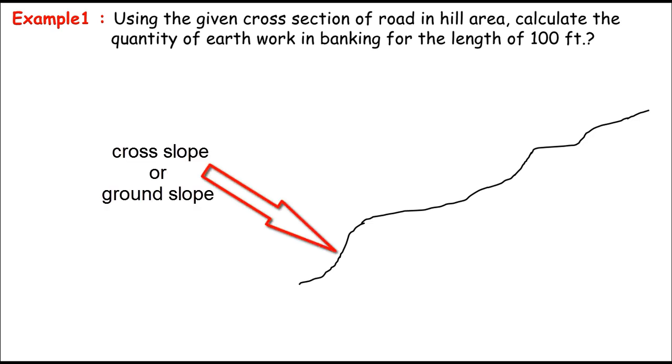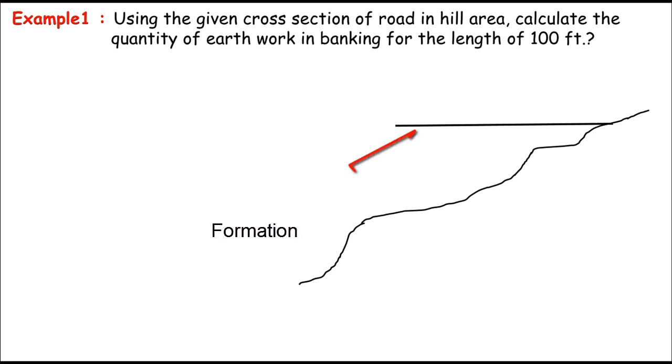This line represents the cross slope or the slope of the hill. And this line represents the formation line, just the formation width you can say. And this is the side slope. Let me assume if the formation width of the road or the breadth of the road is 32 feet, so its half must be 16 feet. And let's assume if the mean depth for the filling is known, that's 1.85 feet.